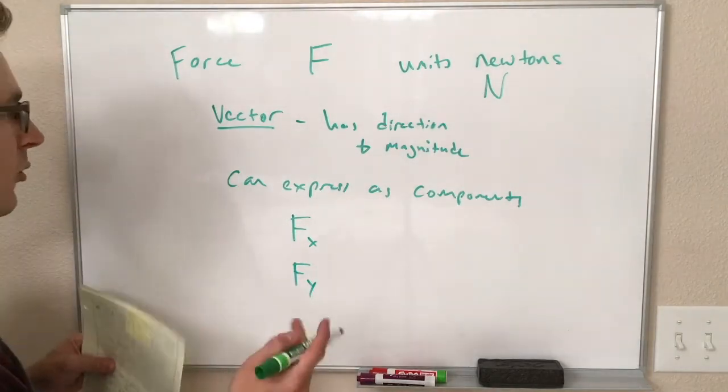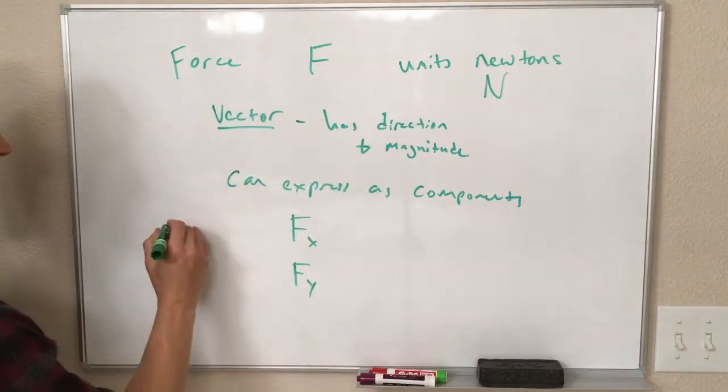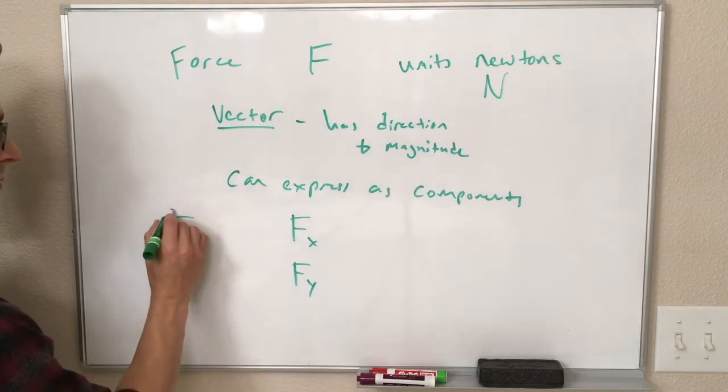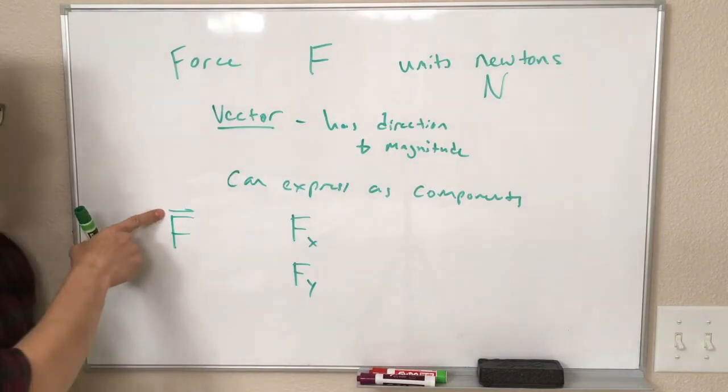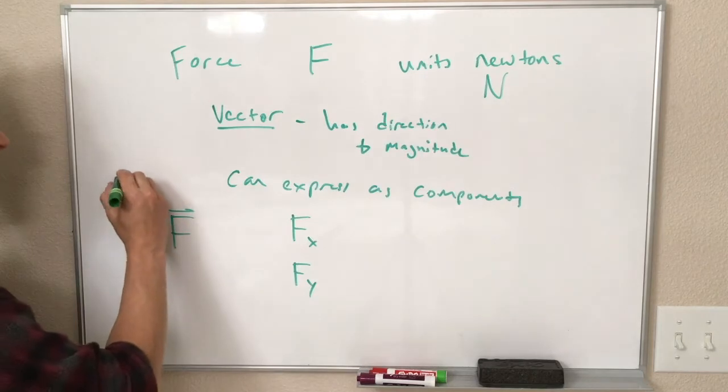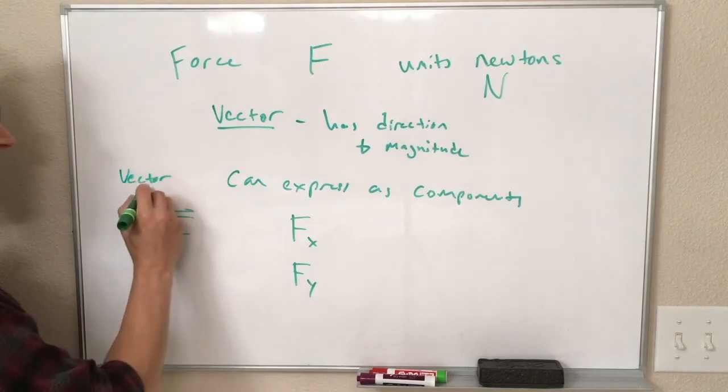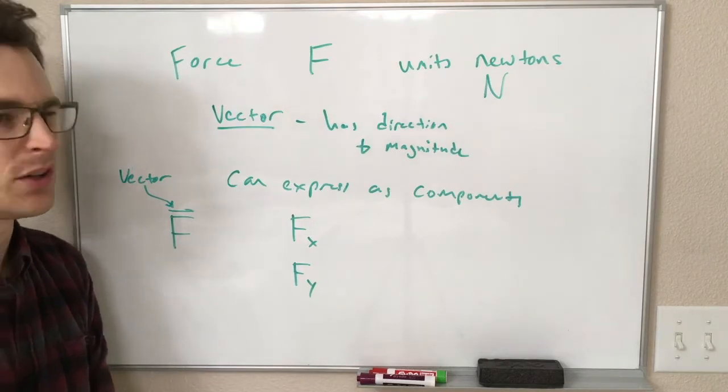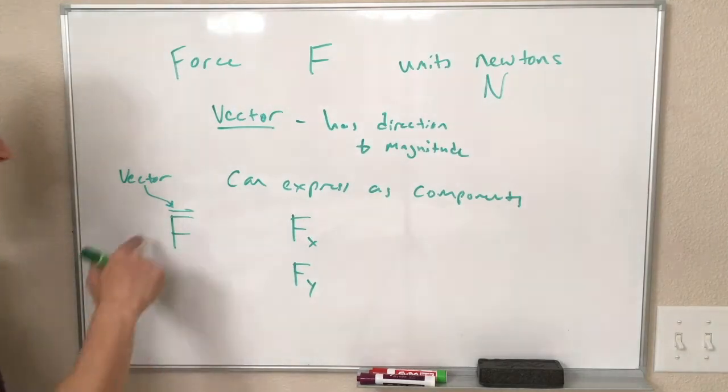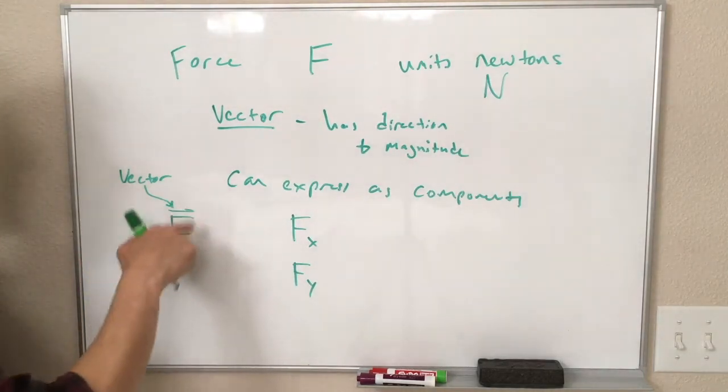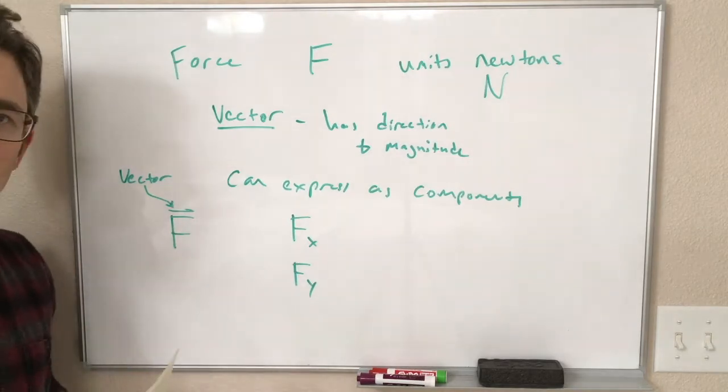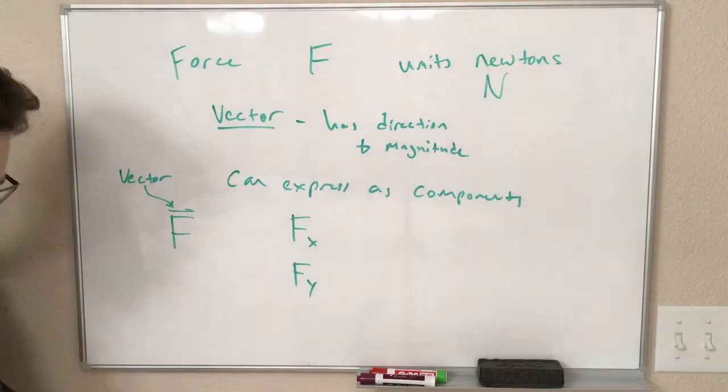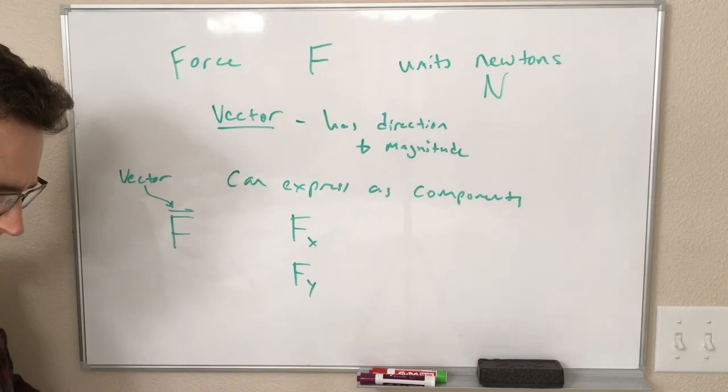It also means we can express this in terms of its vector components. So we can talk about the x component of a force, or the y component of a force, as we did with velocity. If we're being careful in talking about this force vector, it is best to draw a little arrow over the top to indicate that this is a vector.